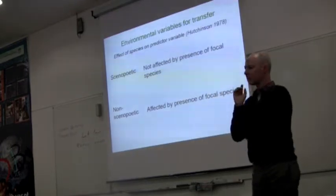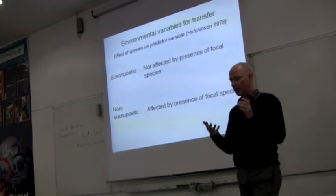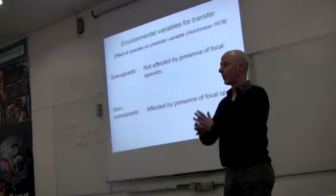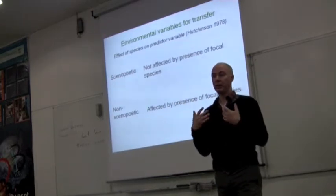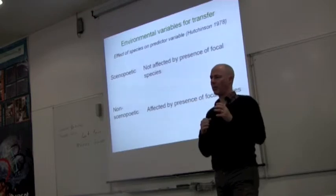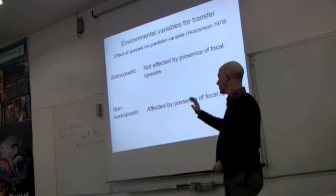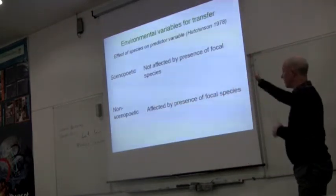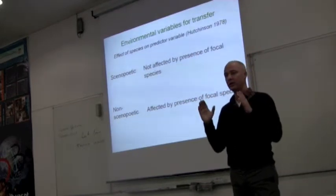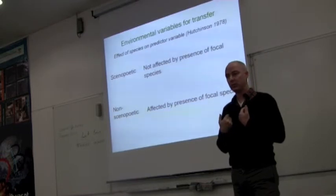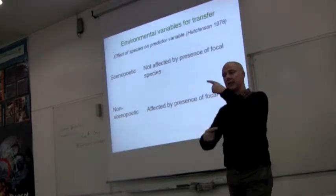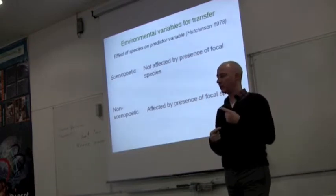So the first part is on variables. There are different classifications of variables. Every variable can and should be classified into three different schemes to help us think about which variables we want to use and which we should not. Yesterday we talked about more practical things — where to find variables — but this is more conceptual. The first is something Hutchinson came up with: synopoietic versus non-synopoietic variables. The synopoietic ones are variables whose values are not affected by the presence of our focal species.